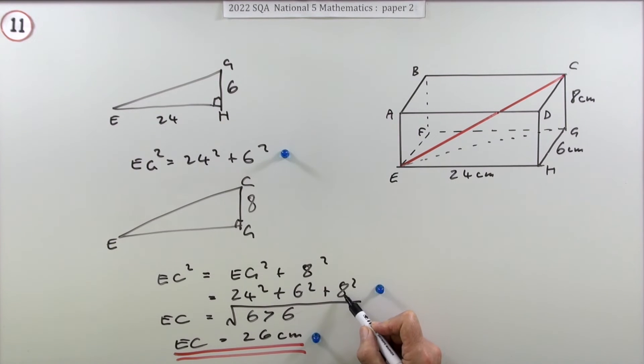But the reason for that is they've chosen a couple of Pythagorean triples here. Look, the 6 and the 8—6 squared and 8 squared makes 10 squared. That's a 3-4-5 triangle doubled up. Once you've got the 10 squared, you've got a 10 squared and a 24 squared. Well, that's double a 5-12-13 triangle, so the answer should be double the 13, which is 26.